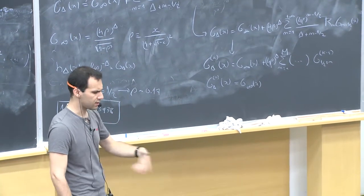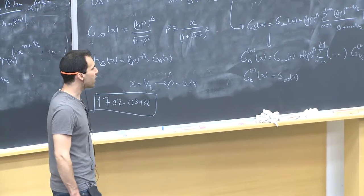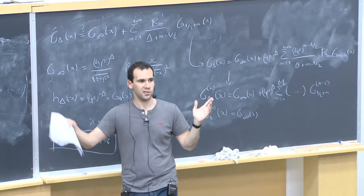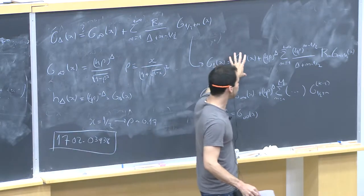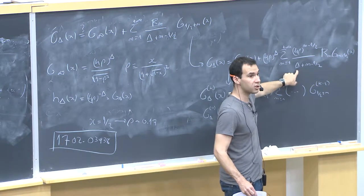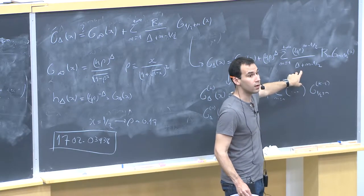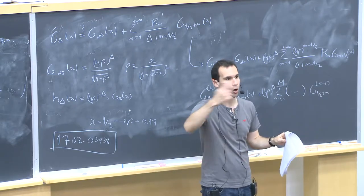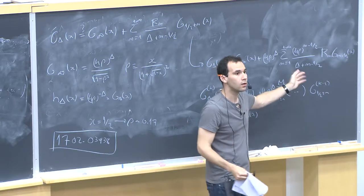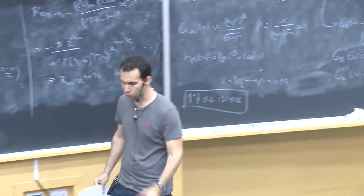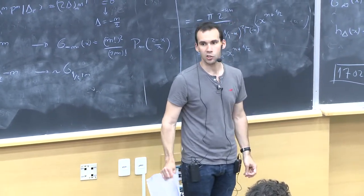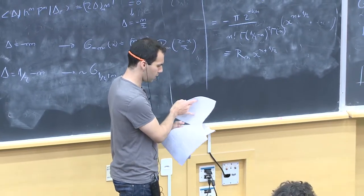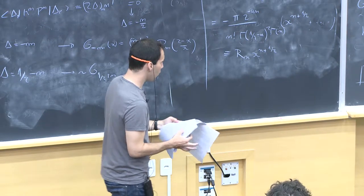In fact, what's usually used in numerics is that you derive this representation such that the blocks are correct to something like 50 digits, and this does not take a lot of time. At the same time, this gives you the block as a rational function in delta, which is extremely useful. Once you've computed this rational representation — you compute it once and for all — you can evaluate any block or its derivatives at that point just by changing this value. You compute these rational representations once, store them on the computer, and then evaluate them whenever you need them.